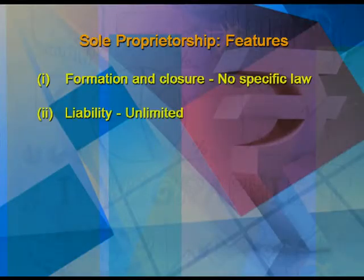The second feature is liability. The liability of the owner is unlimited. That means, if the business profits and reserves are insufficient to meet the creditors' liability, then the personal property of the owner will also be used to meet the liabilities of the business. Owners bear unlimited liability because his business property as well as his personal property is attached with this.